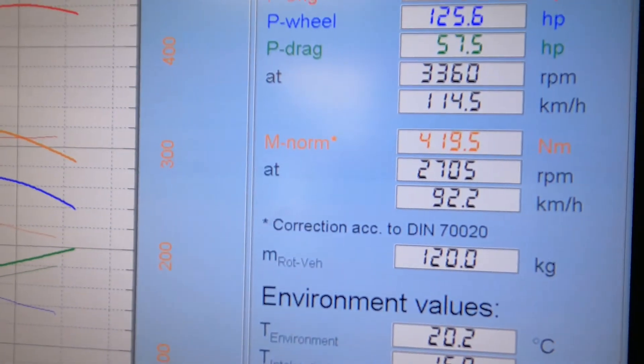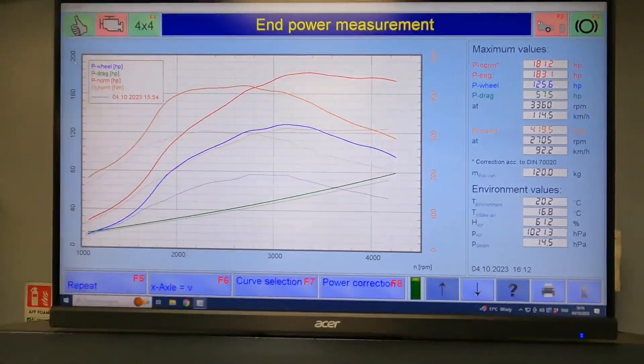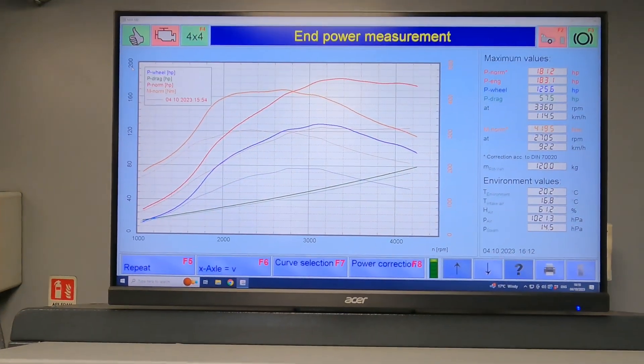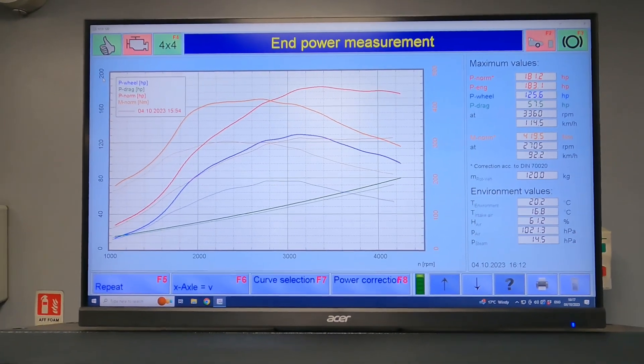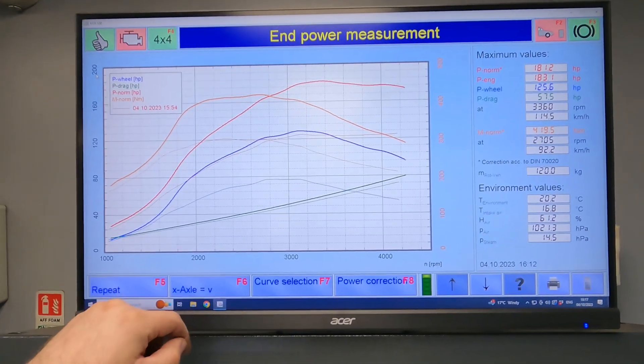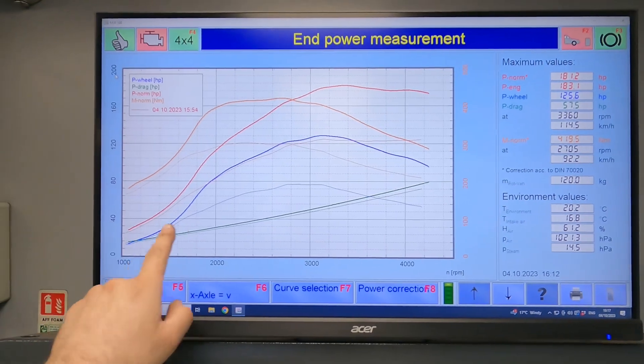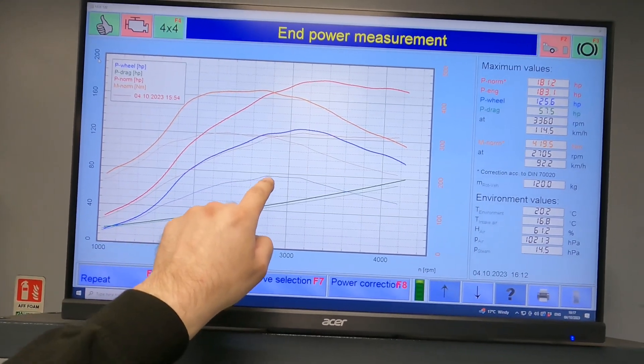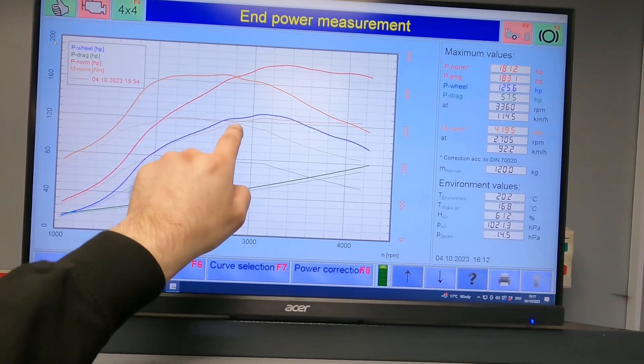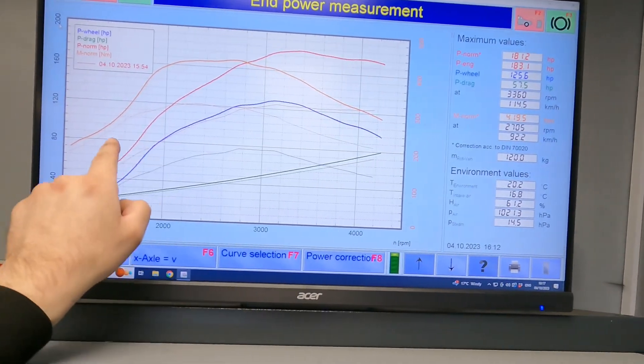181, 419 Newtons of torque. So what you're looking at there is an overlay of what the vehicle was like when it was presented as a standard vehicle, standard ECU, standard map on the ECU, and what you've got is the difference here. This is the standard power at the wheels, standard brake horsepower, and standard torque.